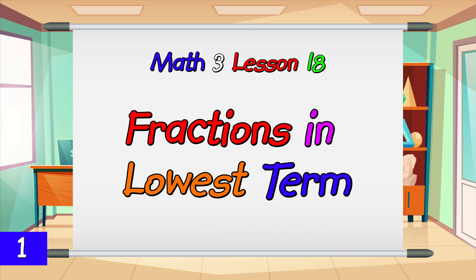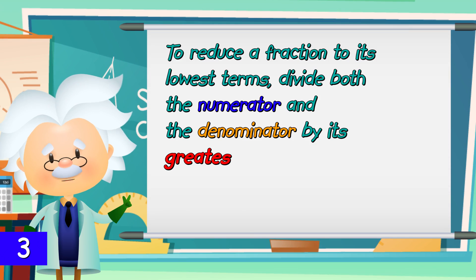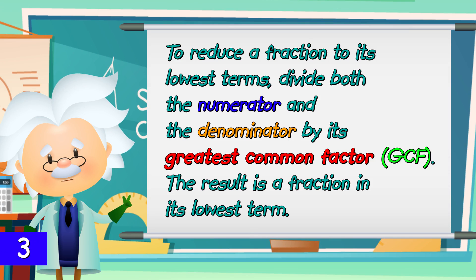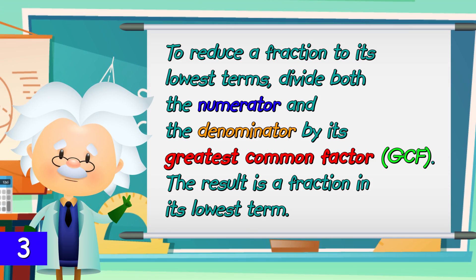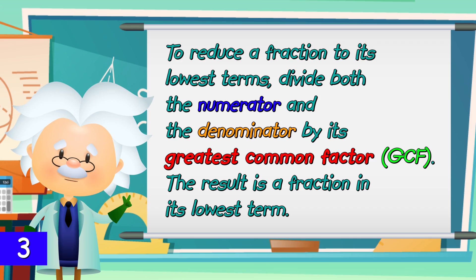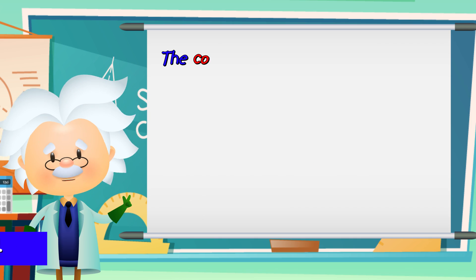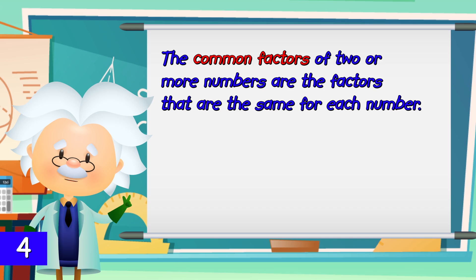Fractions in lowest terms. At the end of this lesson, students should be able to change fractions into their lowest terms. To reduce a fraction to its lowest terms, divide both the numerator and the denominator by its greatest common factor, or GCF. The result is a fraction in its lowest term.